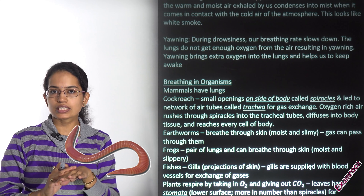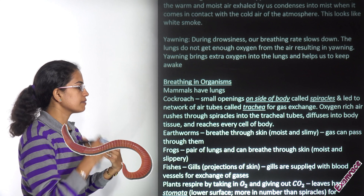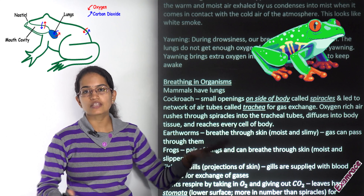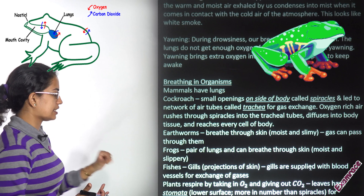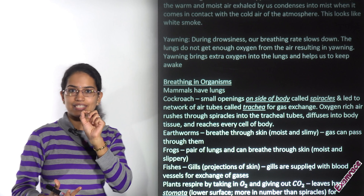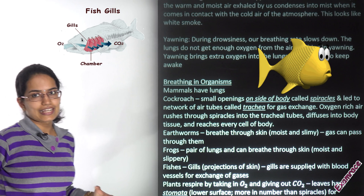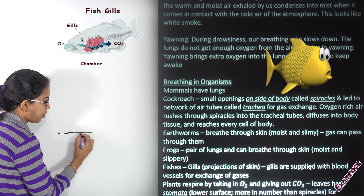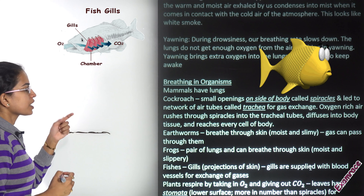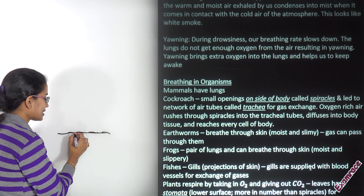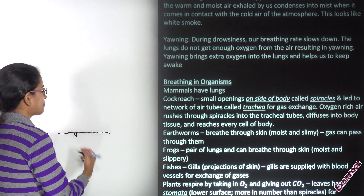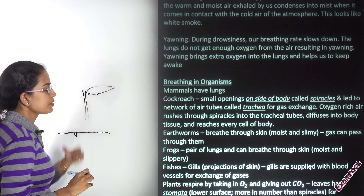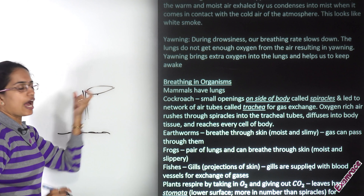Earthworms breathe through their moist, slimy skin, which enables gas exchange. Frogs have a pair of lungs and can also breathe through their moist skin; however, tadpoles have gills. Fish also have gills — projections of skin with blood vessels that exchange gases with the atmosphere. In plants, stomata on the lower side of leaves are more numerous than spiracles and facilitate gas exchange.